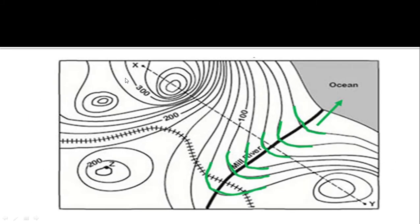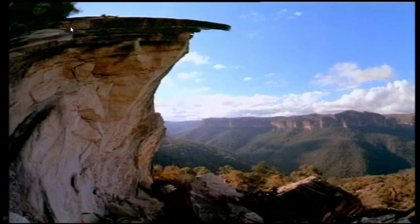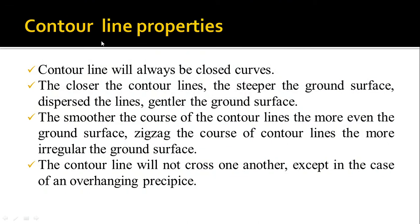The last property is that contour lines will not cross one another. In any contour map you cannot see one contour cutting across another — except in the case of an overhanging precipice. In that structure, if you draw contours, say a 500-meter contour and a 300-meter contour, they would cross one another. So the only exception to contours not crossing is an overhanging precipice.